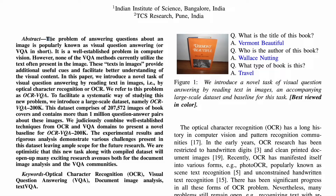The problem of question answering about an image is popularly known as Visual Question Answering, or VQA. It is a well-established problem in computer vision. However, none of the VQA methods currently utilize the text present in the image, even though such text provides additional useful cues and facilitates better understanding of visual content.